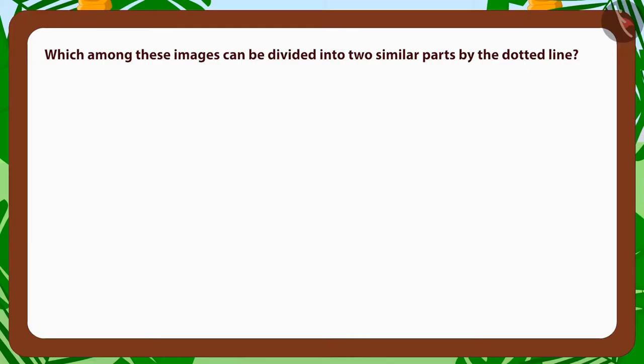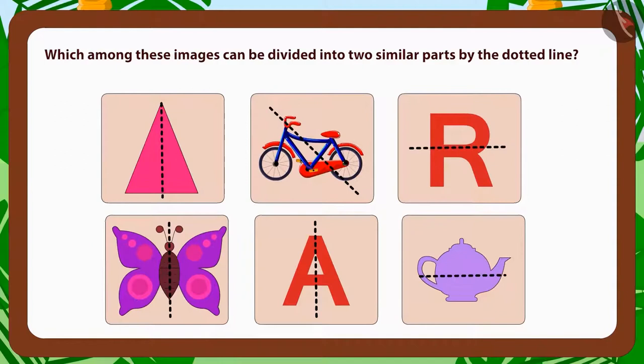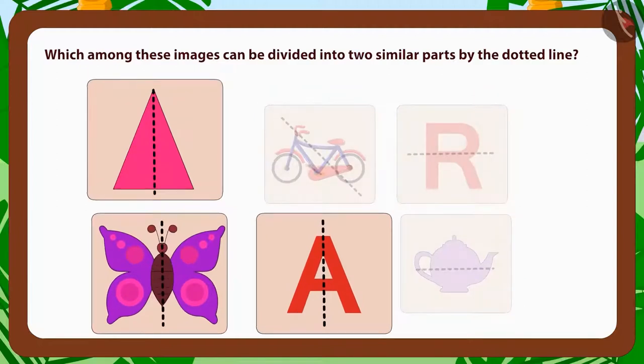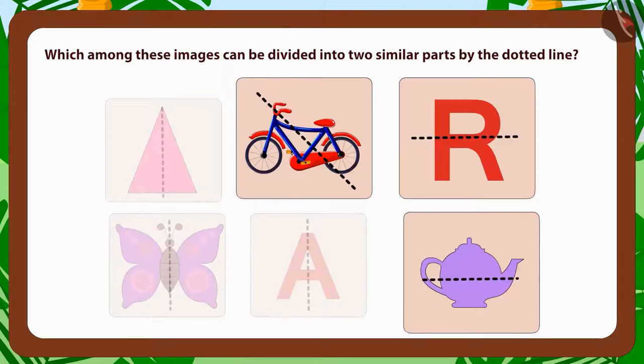Children, can you guess which among these images can be divided into two similar parts by a dotted line? Wow, you are smart. These are images that are being divided into two similar parts by the dotted lines. And these are not getting divided into two similar parts.